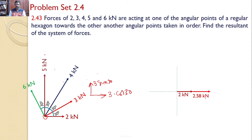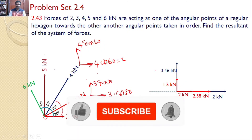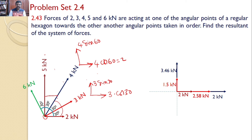The horizontal component of 3 kilonewtons is 3 cos 30 = 2.58 kilonewtons, and the vertical component is 3 sin 30 = 1.5 kilonewtons. Similarly, the 4 kilonewton force makes an angle of 60 degrees with the horizontal, so the horizontal component is 4 cos 60 = 2 kilonewtons, and the vertical component is 4 sin 60 = 3.46 kilonewtons. The 5 kilonewton force is vertical, so it has only a vertical component and no horizontal component.